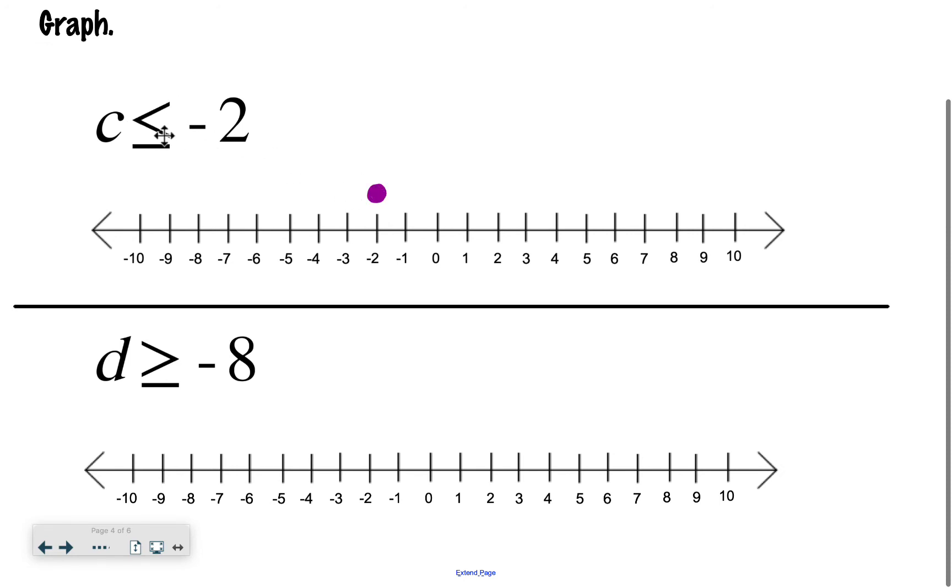So c is less than or equal to negative 2, so which number is less than negative 2? That'd be like negative 3, negative 4, so I'm going to draw my arrow pointing that direction.